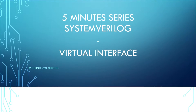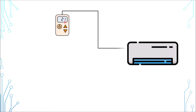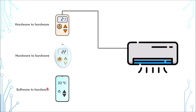This is an air conditioner. In the old days it is controlled by a controller which is mounted on the wall and connected by wires. Later the controller is made wireless and can control remotely. And most recently you can launch an app on a smartphone to do the same thing. This is a hardware controlling another hardware. This is the same even though there are no wires involved. This is a software controlling a hardware.